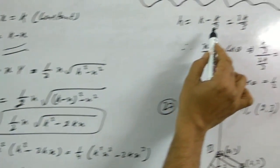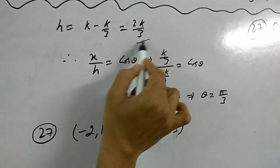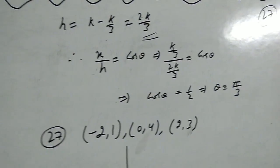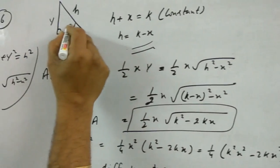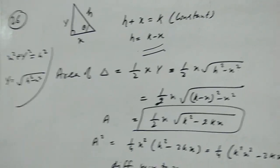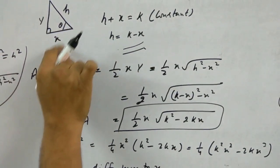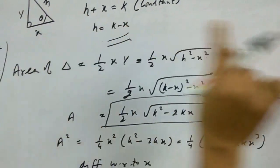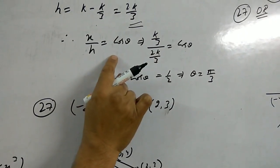Now the second part. h is k minus x. We have put x as k by 3, so h is 2k by 3. Let's see: x upon h, base upon hypotenuse, is cos theta. x upon h equals cos theta.